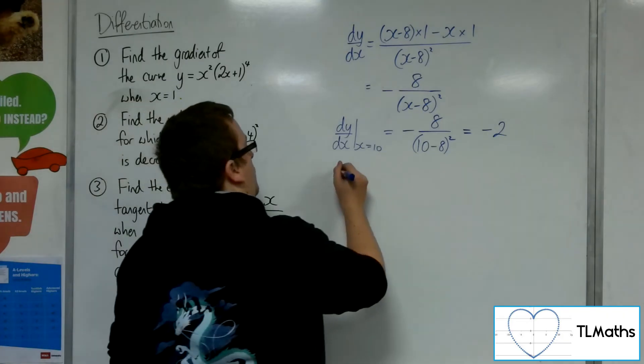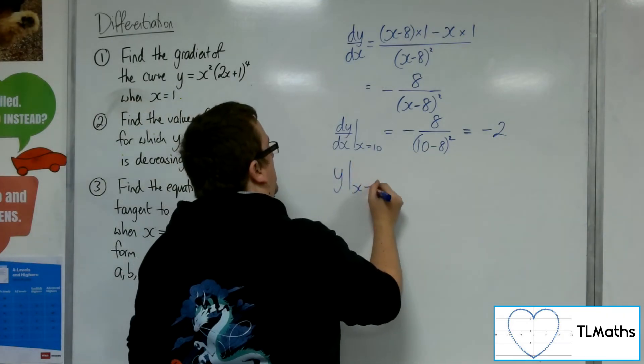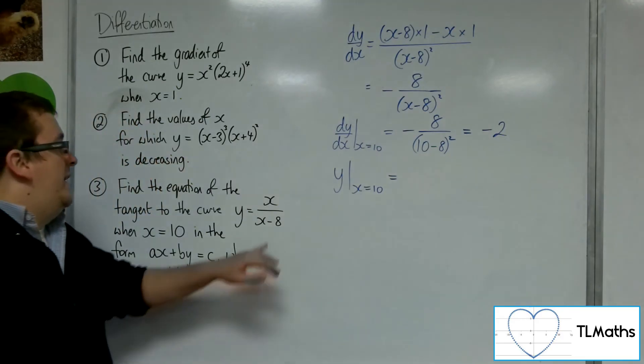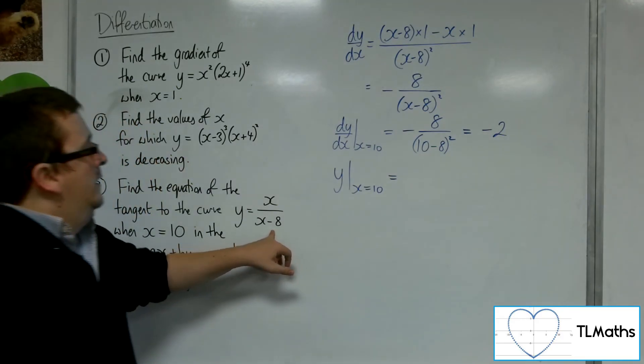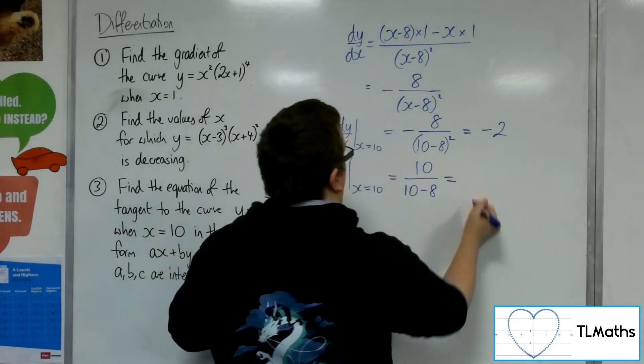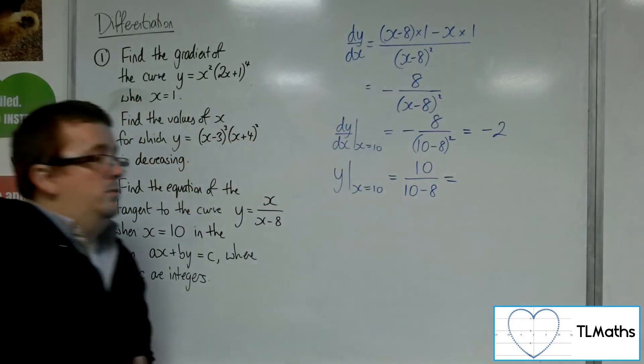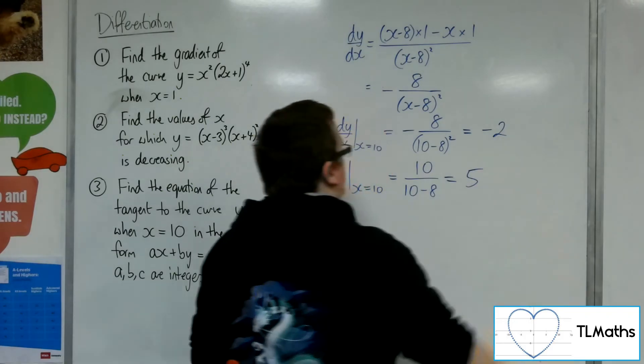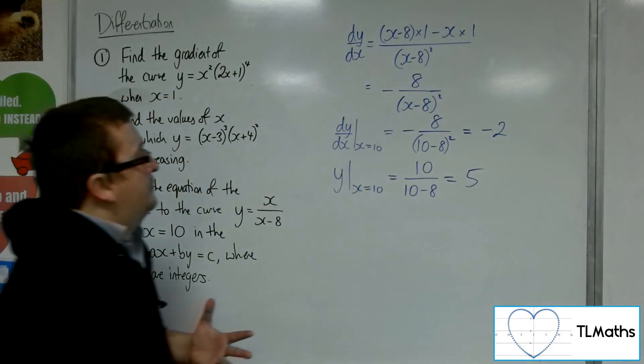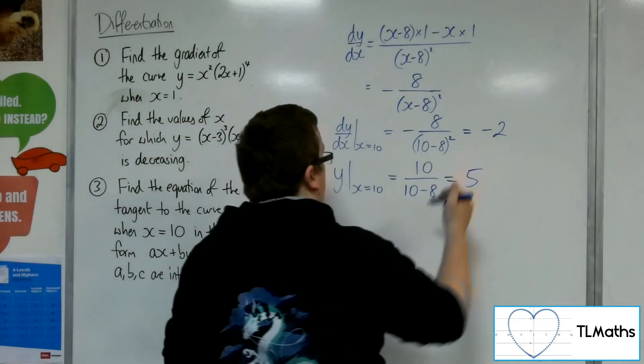I also need to find the y value when x is 10. So that would mean substituting x is 10 into the y equals. So that will give me 10 over 10, take away 8. So that's 10 over 2, which is 5. So I now have all the information I need. That's the gradient of the tangent, remember.